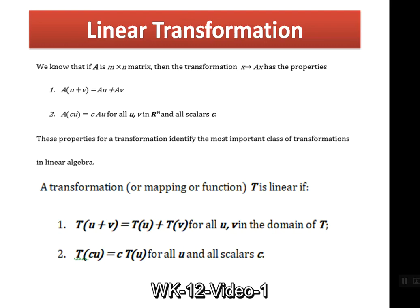If the transformation is split over addition — first applied to one vector then the other, then added — there will be no difference. u and v must belong to the domain of transformation T. Similarly, if a scalar is applied to a vector and then the transformation is applied, or the transformation is applied first and then the scalar is multiplied, there will be no difference. Such a mapping is called a linear transformation.